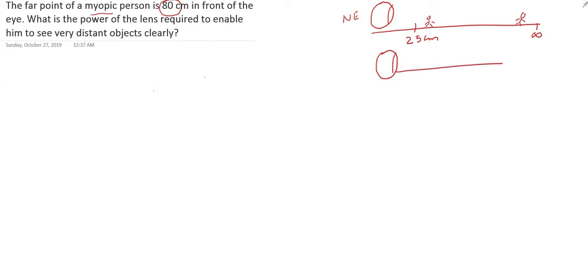For a myopic person, there is a problem. There is no problem with his near point — he can see the object if it is nearby. But he cannot see any object beyond 80 centimeters. So if there is an object at infinity, he cannot see it. In this case, a concave lens is used.